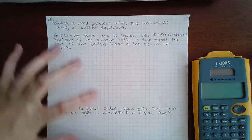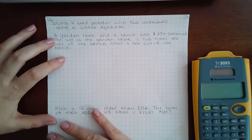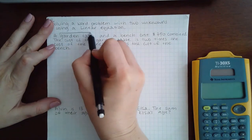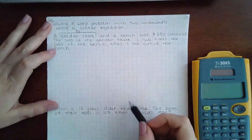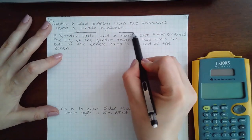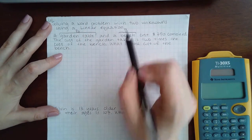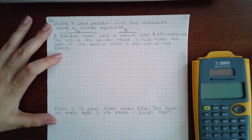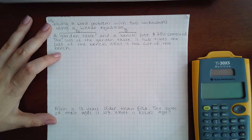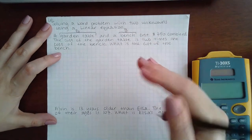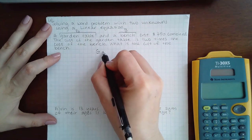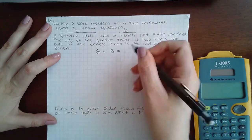In this case you have two different things: a garden table which I'm going to use the letter G to represent, and a bench which I'll use the letter B to represent the cost of the bench. Combined it costs $750, so that first sentence tells me an equation. The cost of the garden plus the cost of the bench equals $750.